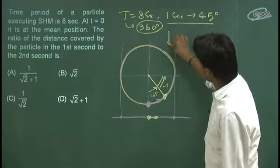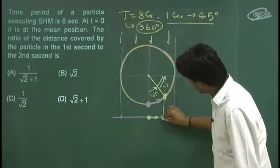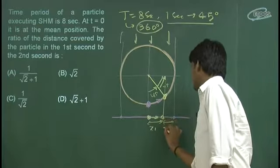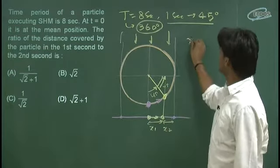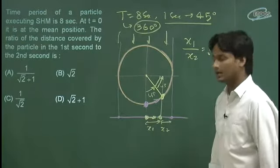To agar iski shadow dekhi jaye, kyunki iski shadow jo projection yaha SHM kar raha hai, to iski shadow yaha pe padegi. Ab ye wali distance agar x1 hai, to ye wali distance kya hai? x2. To usne pucha hai hamse ke x1 by x2 ki value bataiye.